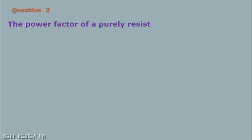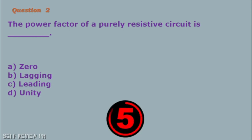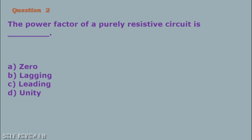Question number 2: The power factor of a purely resistive circuit is blank. A. Zero B. Lagging C. Leading D. Unity. The correct answer is letter D, Unity.